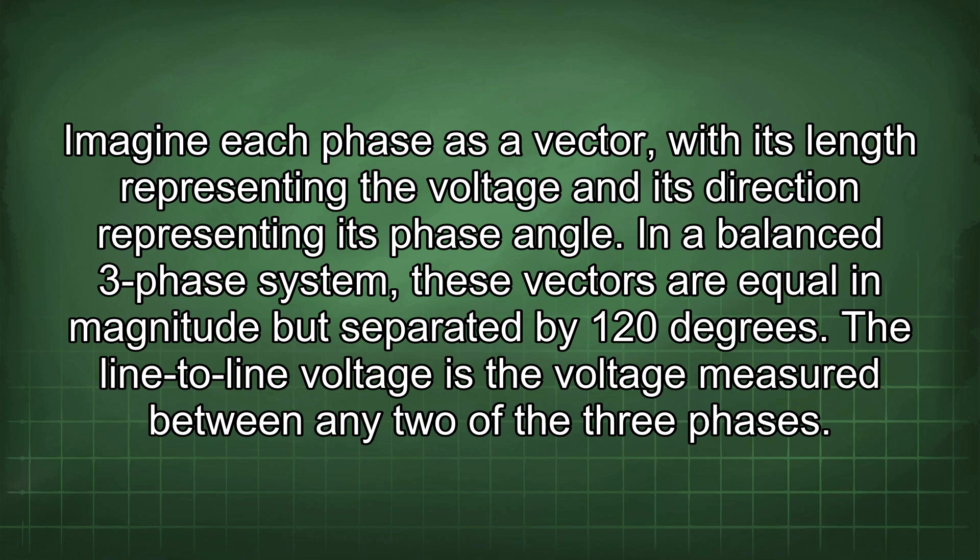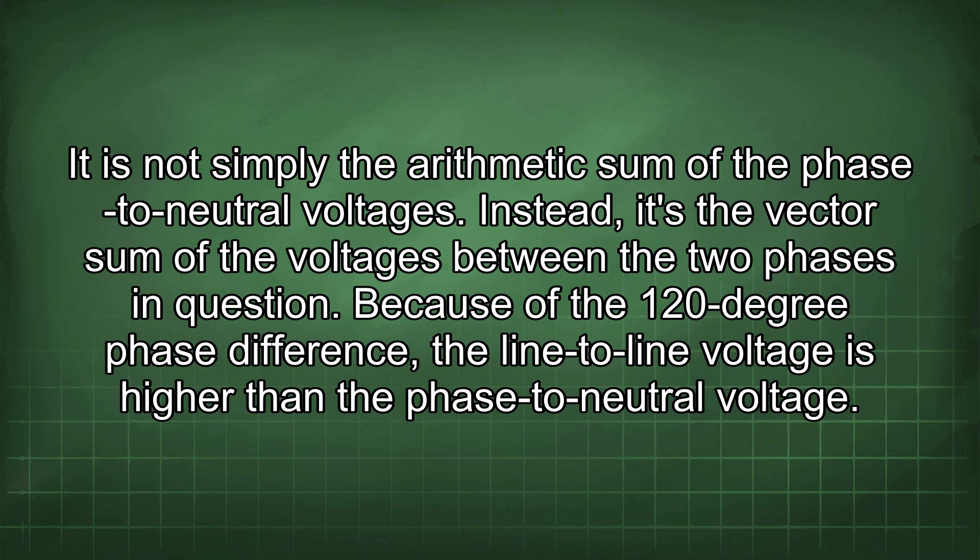The line-to-line voltage is the voltage measured between any two of the three phases. It is not simply the arithmetic sum of the phase-to-neutral voltages. Instead, it's the vector sum of the voltages between the two phases in question. Because of the 120 degree phase difference, the line-to-line voltage is higher than the phase-to-neutral voltage.